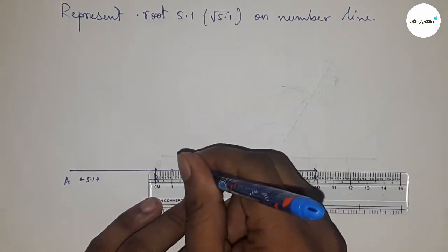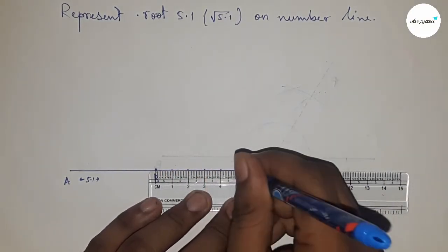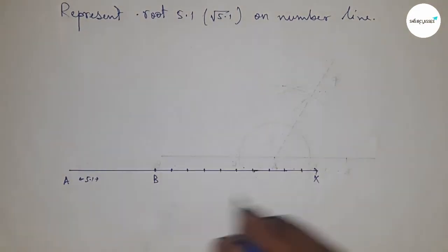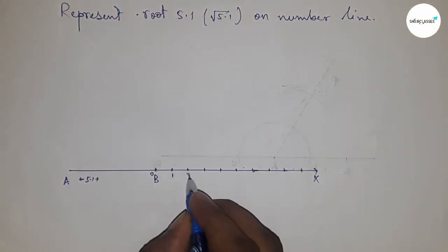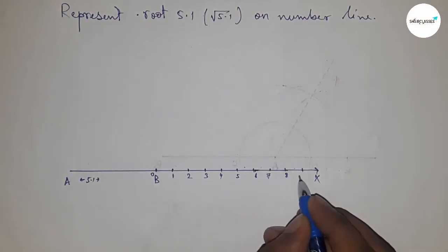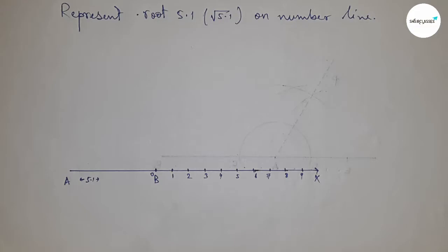Next, mark all the numbers from B to X. Starting at 0, then 1, 2, 3, write down all the numbers here. This is point C.